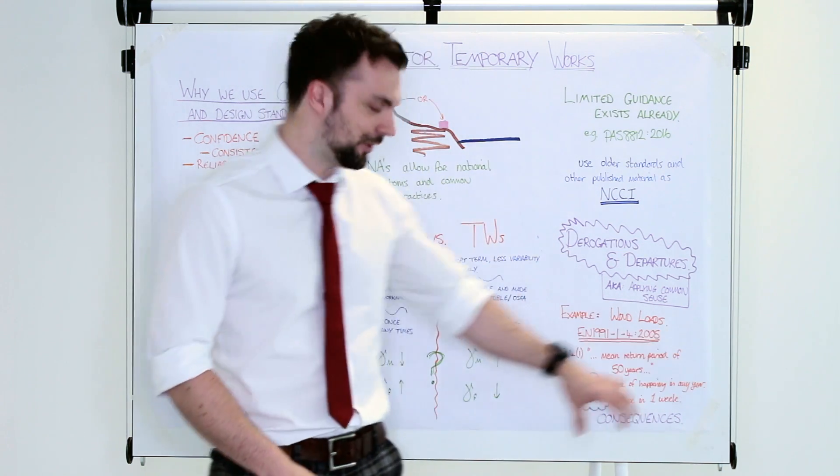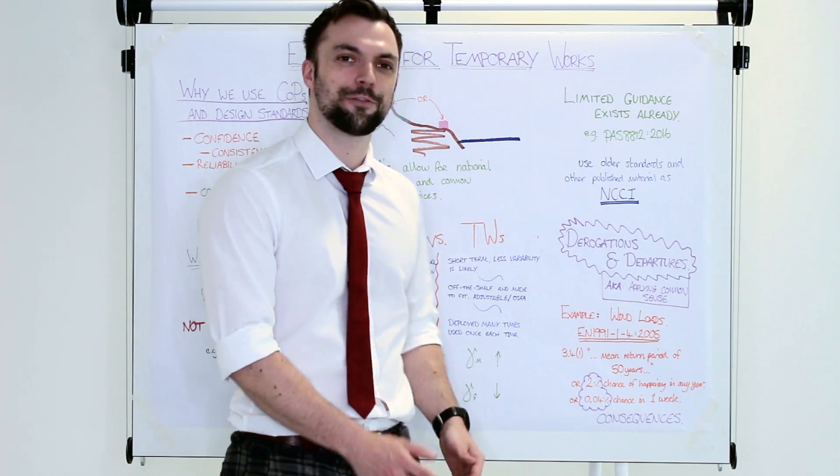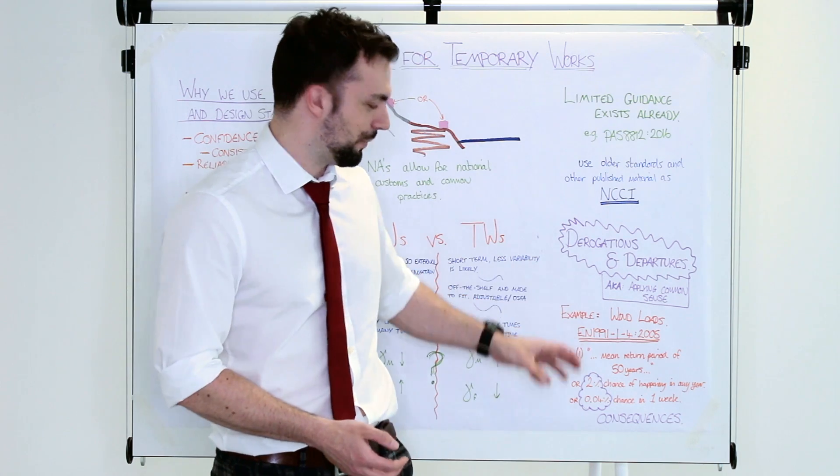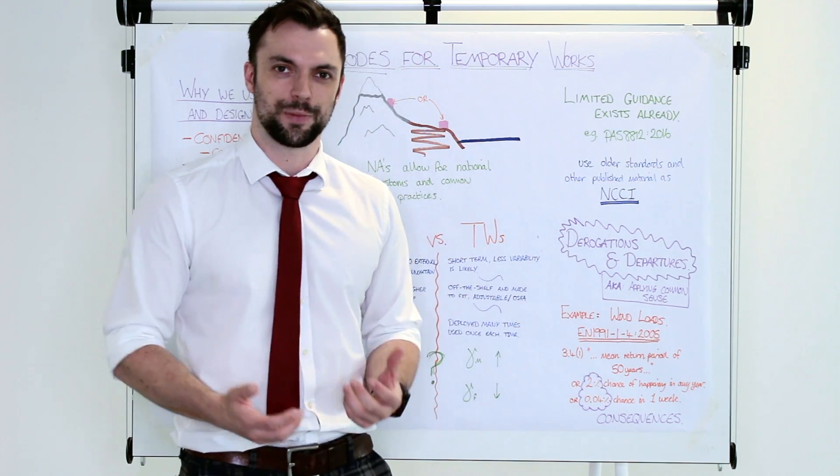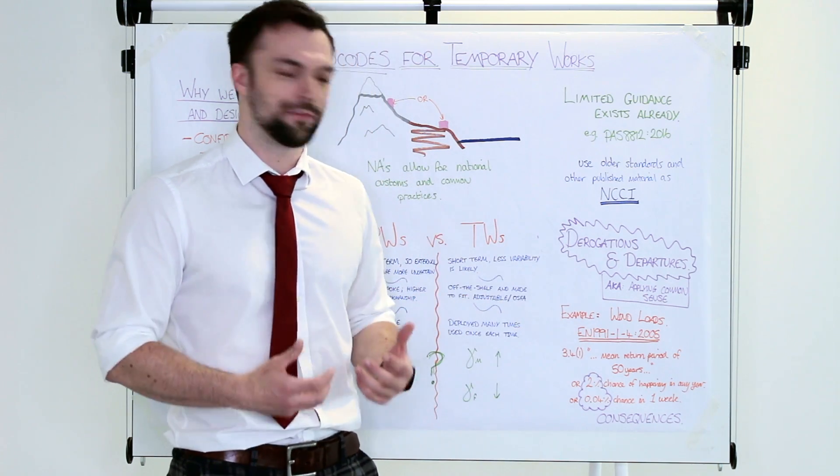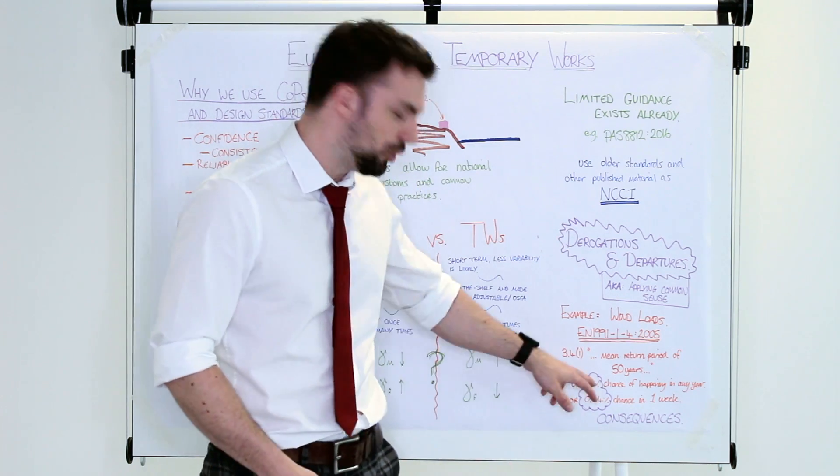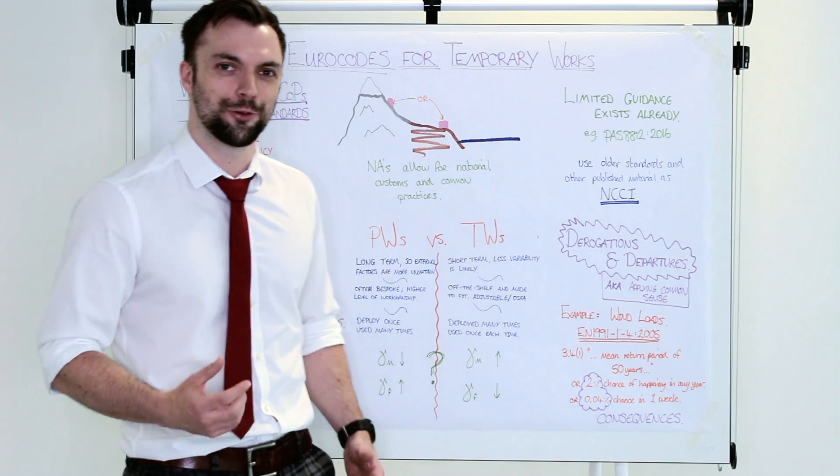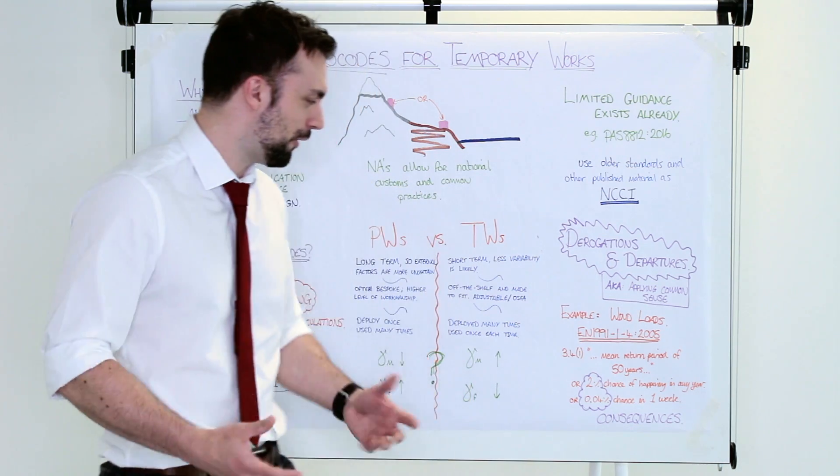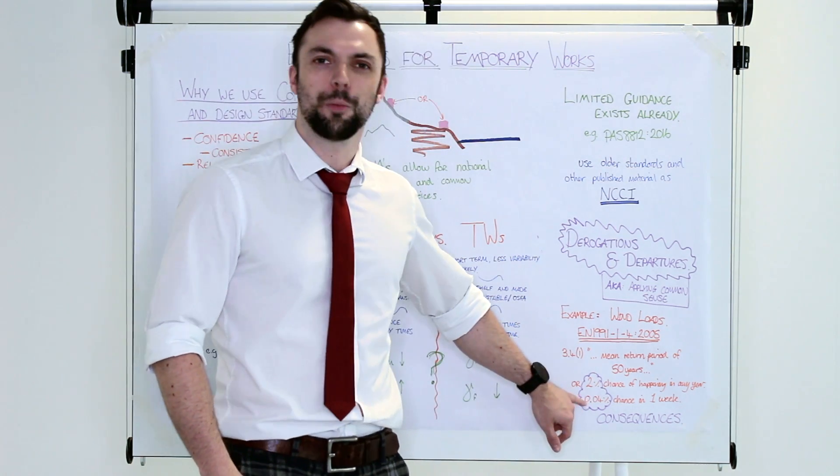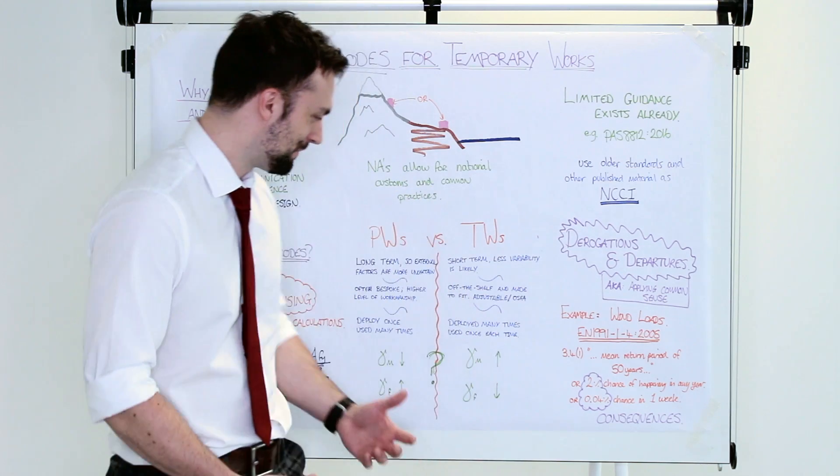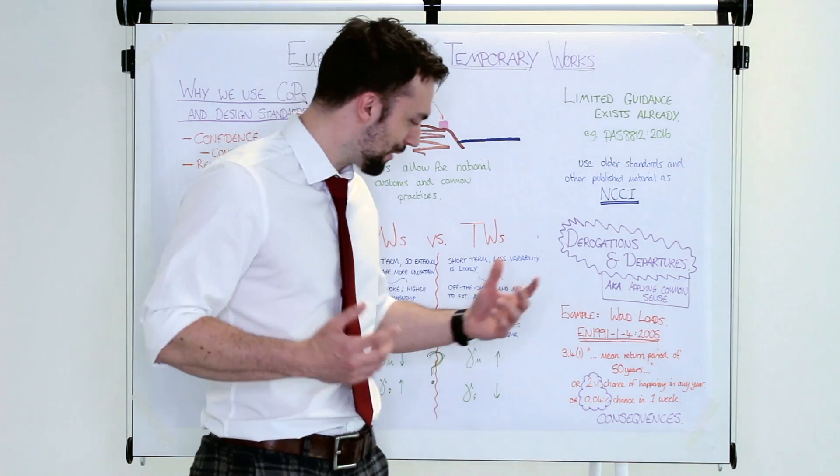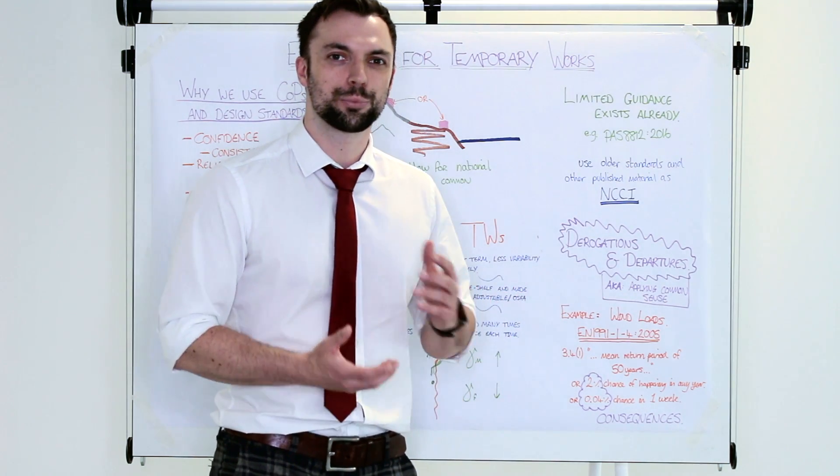I'll use the example of wind loads now. EN 1991, part one, part four, written in 2005. And it tells you for the wind loads that you use a mean return period of 50 years for the wind speed, a storm that might happen once every 50 years. Another way of saying that is there's a 2% chance of it happening in the given year. But how temporary works isn't on site for a whole year, it's on site for maybe a week or four weeks or something. So you've got a 0.04% chance of that ever actually happening. Do we really need to account for something that's got a 1 in 2,500 chance of happening? Probably not.